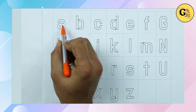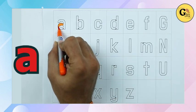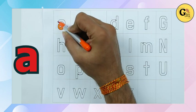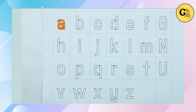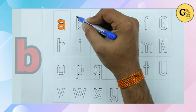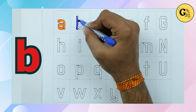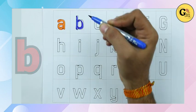Make small a. A for apple. It's a. B. B for ball. Small b.